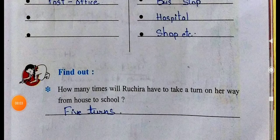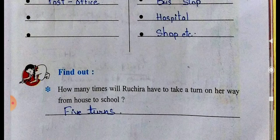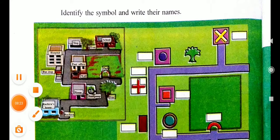Find out how many times Ruchira will have to take a turn on her way from house to school. The answer is five turns — five curves. She will turn five times from her home to reach her school. Now identify the symbols and write their names — you can see the picture with given boxes.